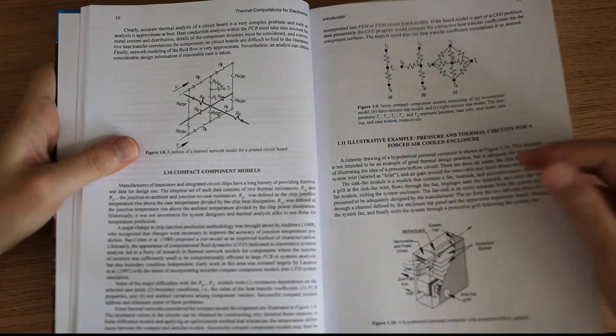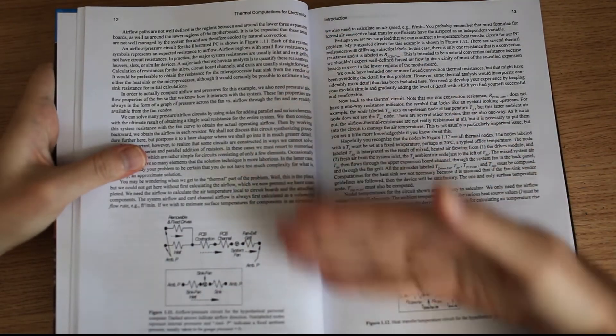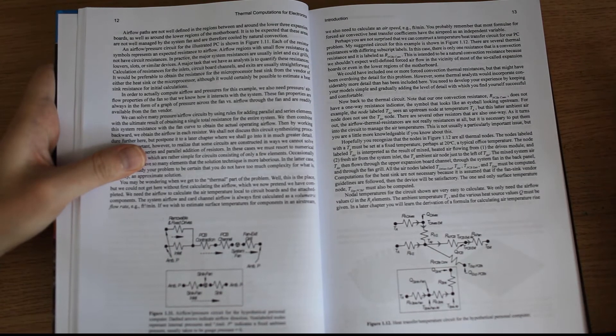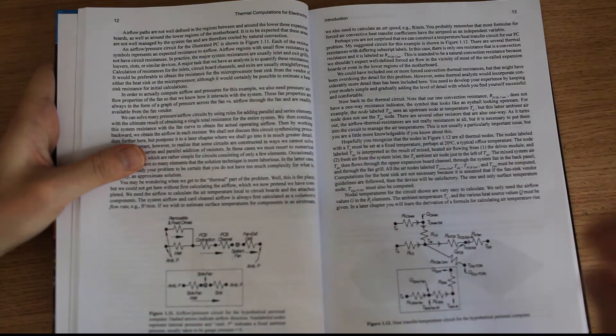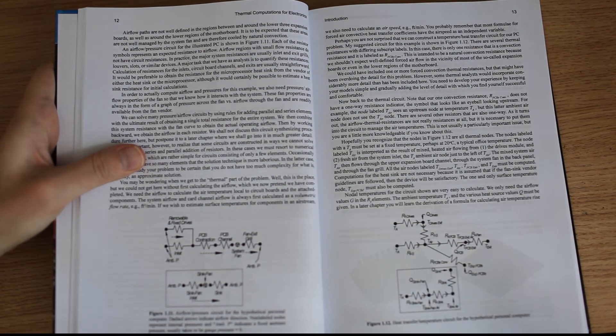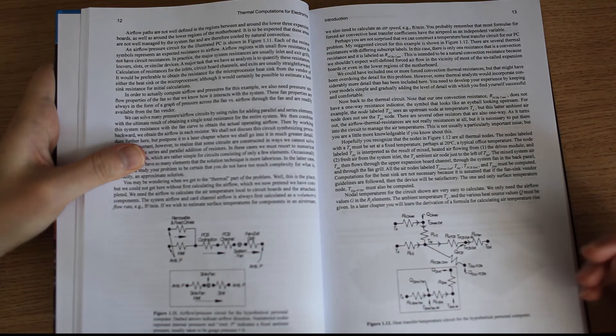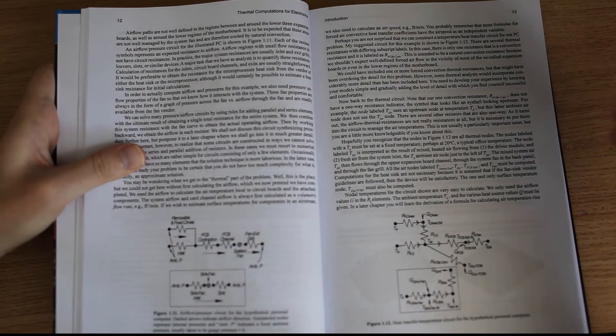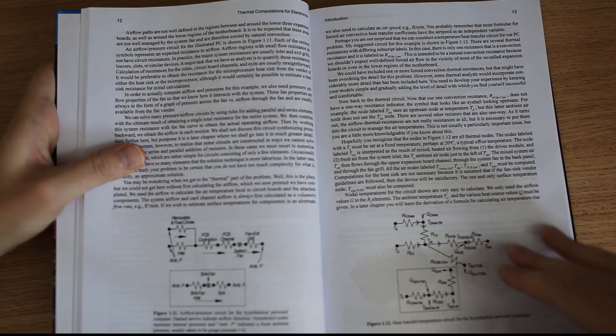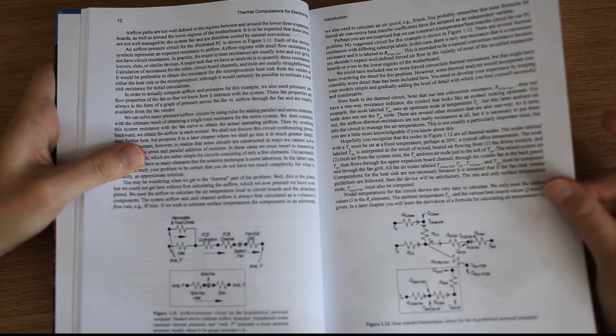But if you follow what is explained here and the way to calculate this kind of system, you understand that you can make each part of the system as a separate component with a certain thermal resistance. You can understand the flow of heat and in which way it's going. And you can get some calculation going on very quickly using such a method.